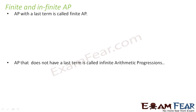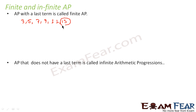For example, consider an AP with first term 3 and common difference 2: 3, 5, 7, 9, 11, 13. If 13 is the last number, then there are a finite number of elements in the AP and it has a last term. This is called a finite AP.